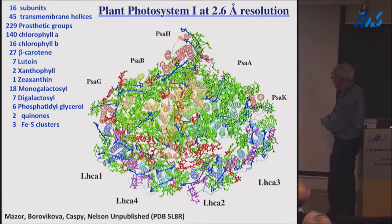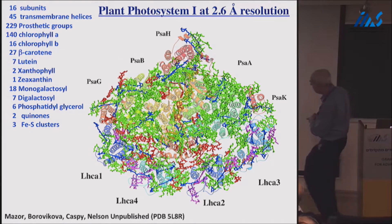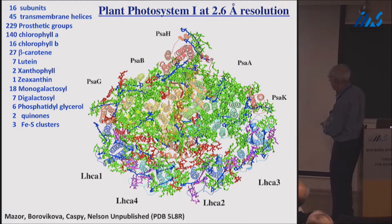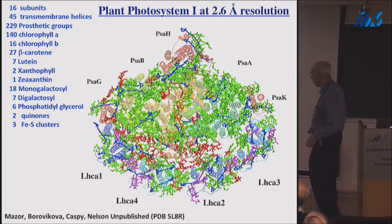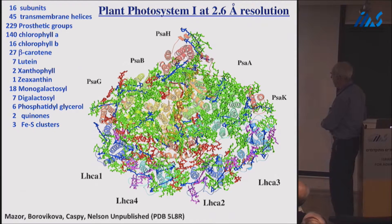All together, what we have is 16 subunits right here, we have 45 transmembrane helices, 229 prosthetic groups, which is, no other complex in the world can show this kind of things. 140 chlorophyll A, 16 chlorophyll B, 27 beta-carotene, seven luteins, two xanthophylls, zeaxanthin, and the different lipids that are present there, and the two quinones and three iron sulfur clusters. And you see the intricate structure right here that it fills up the entire thing, very beautiful.